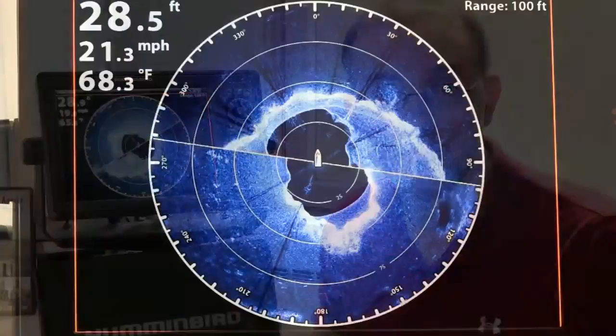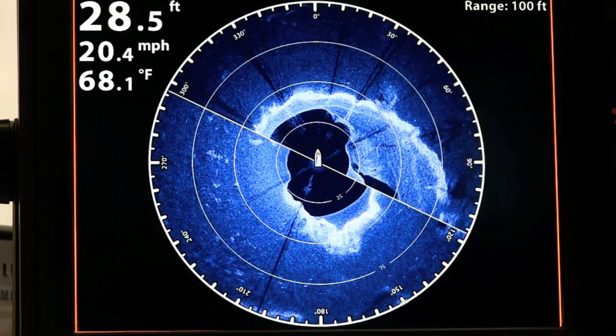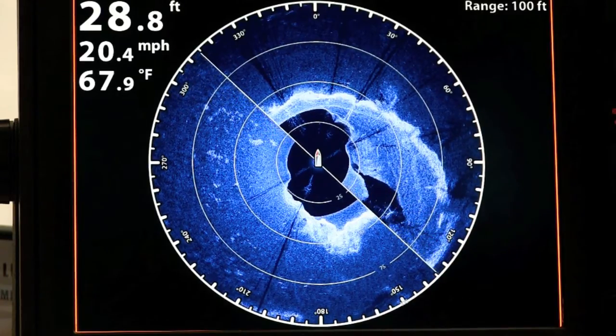Humminbird's 360 imaging system represents the most powerful sonar technology available to anglers today. Only 360 imaging provides us with a real-time comprehensive view of the bottom and the water column surrounding the boat in all directions.